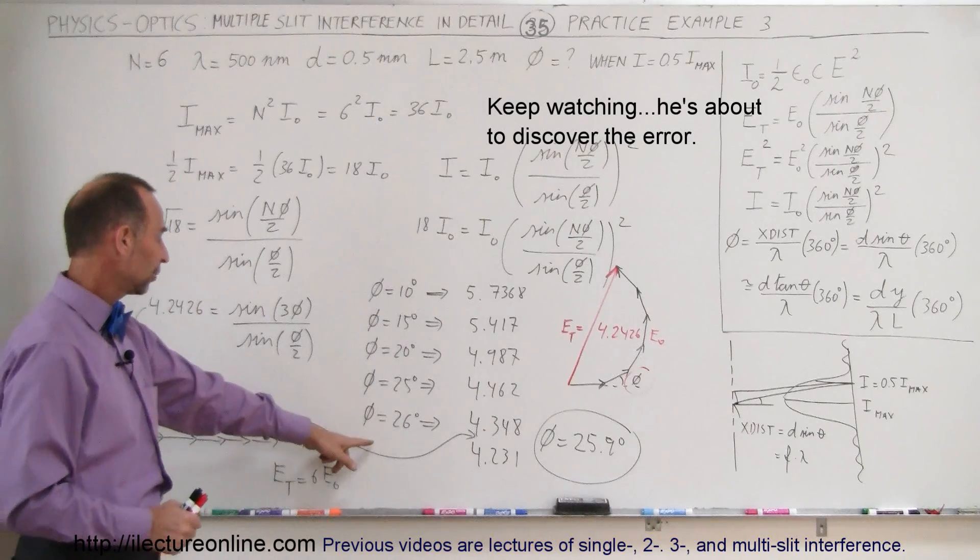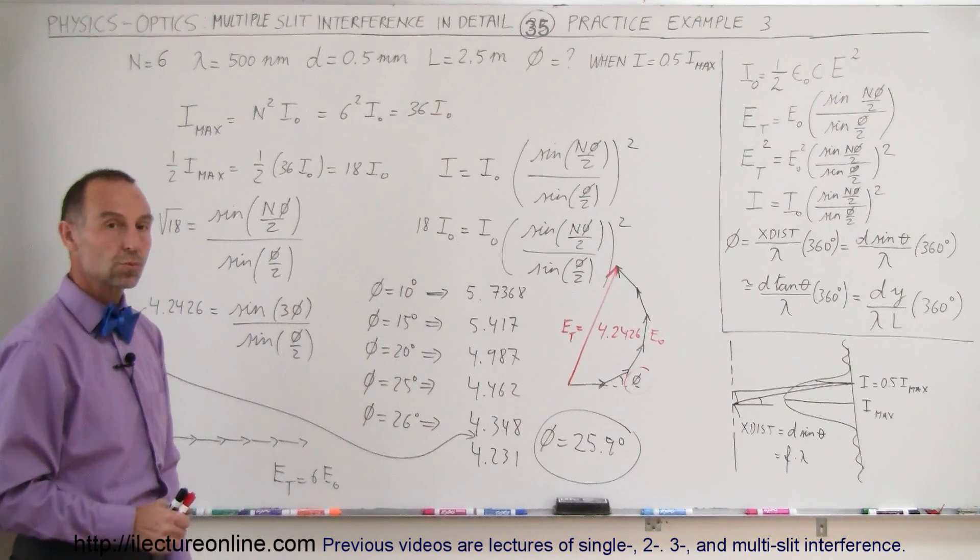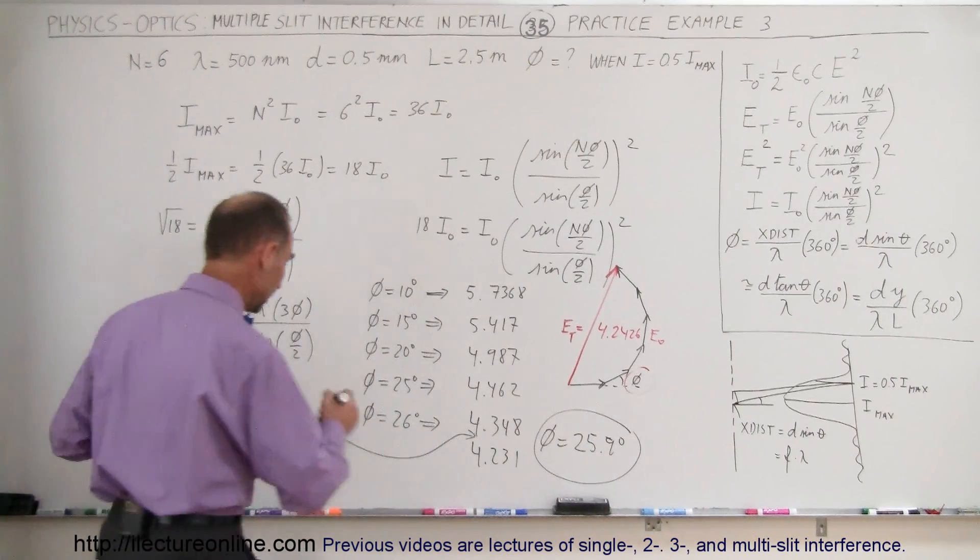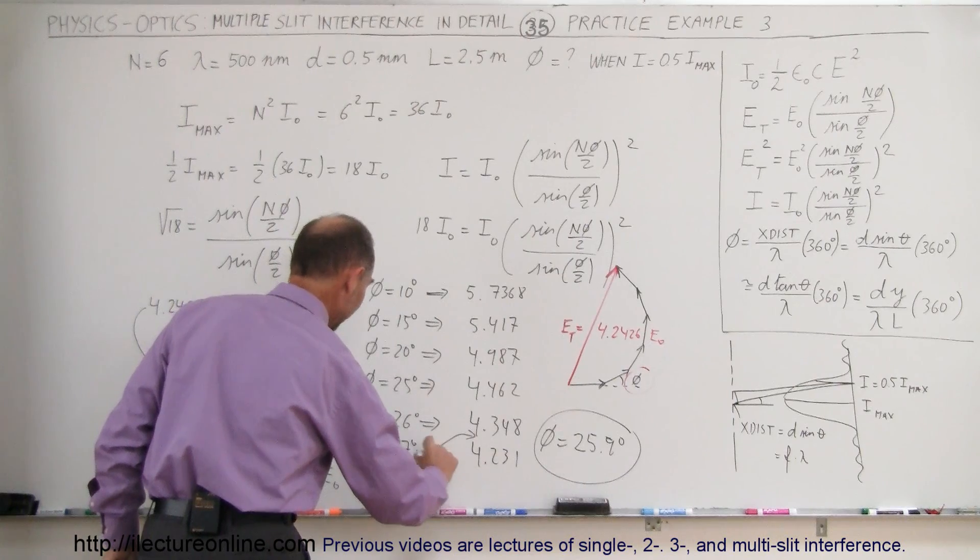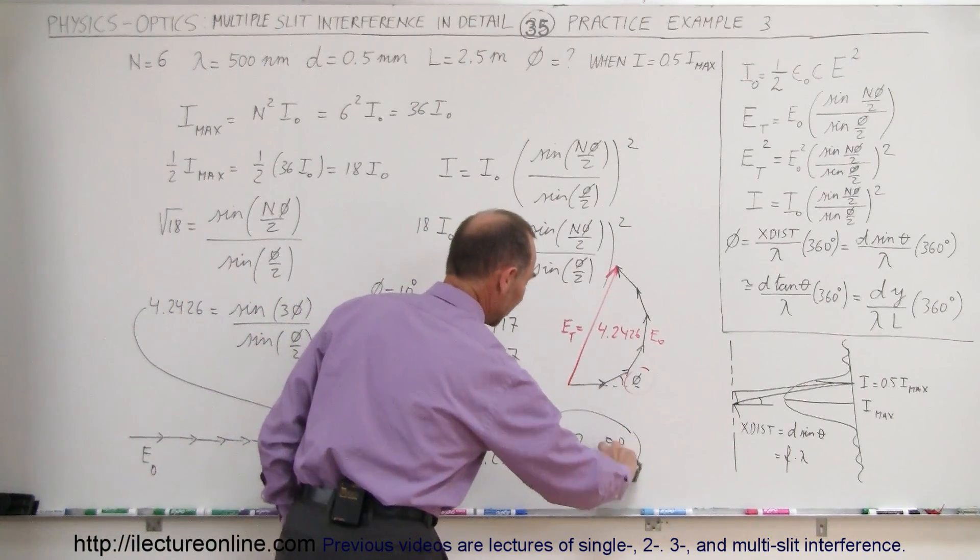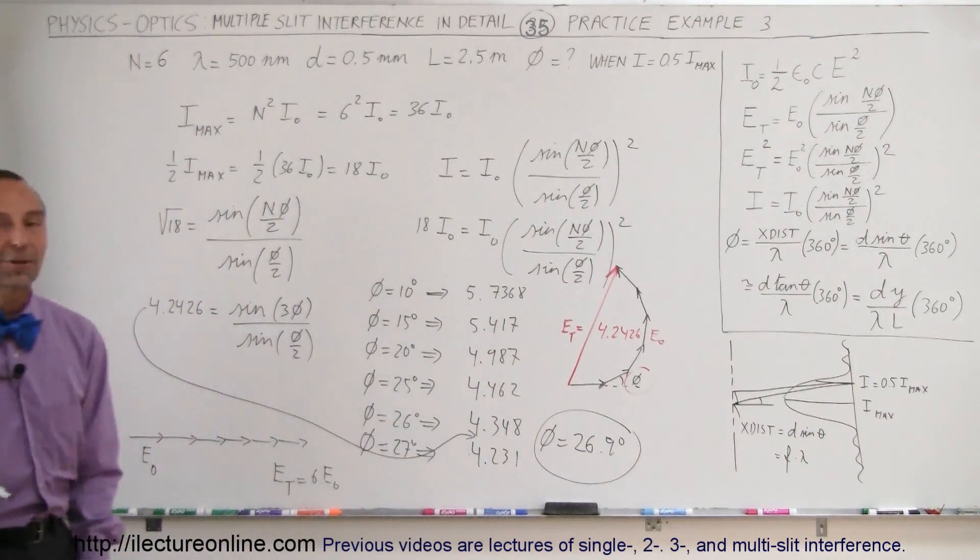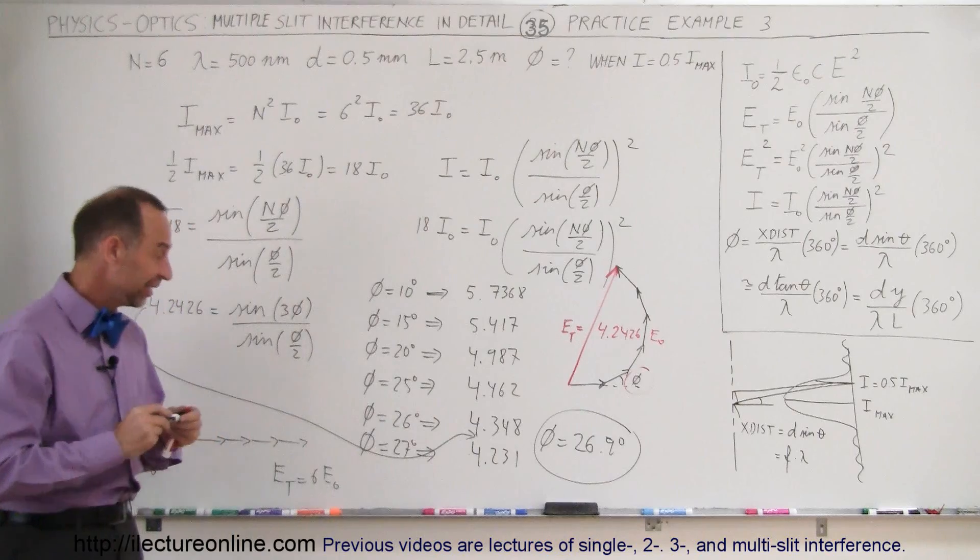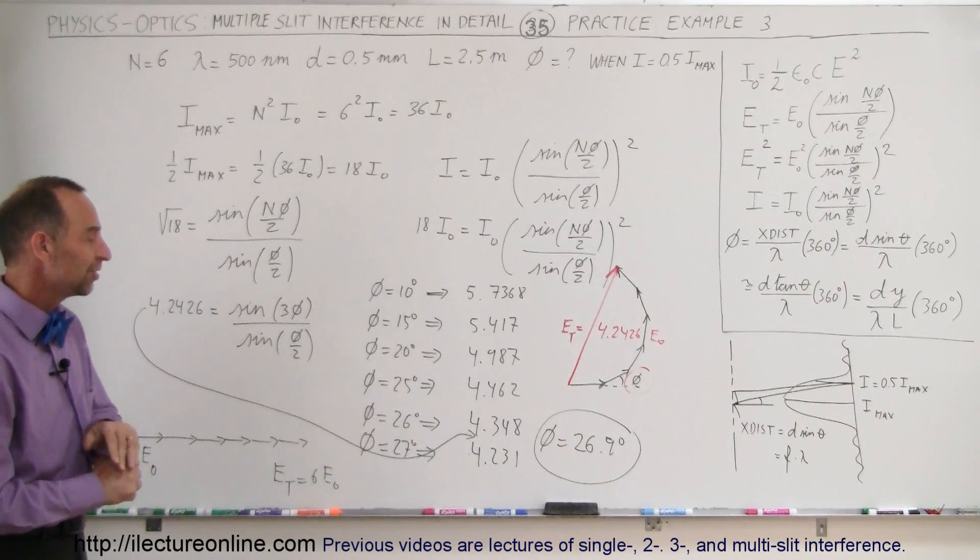Oh, did I forget to write 27? I can just go ahead. Realizing that I forgot to write 27 degrees, which gives us this number, so yes, the actual answer is not 25.9, but 26.9 degrees. That's what I get for being lazy and not writing down that my last attempt was for the phase angle of 27 degrees.